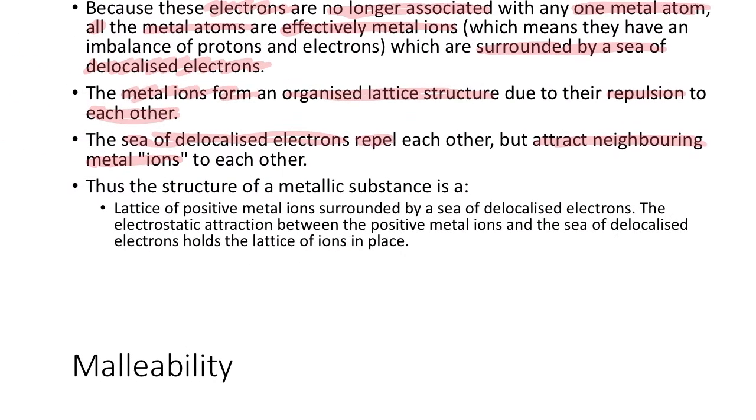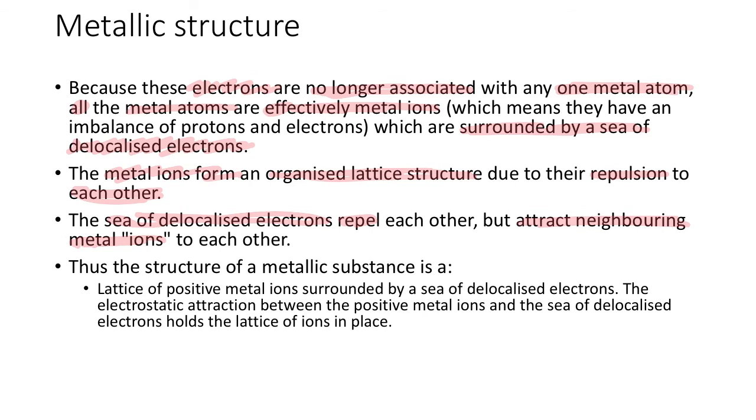So the idea is that if you were to ask to describe the metallic structure, you would say it's a lattice of positive metal ions surrounded by a sea of delocalized valence electrons or delocalized electrons. The electrostatic attraction, which is the attraction between the positive metal ions and the sea of delocalized electrons, hold the lattice of ions in place. So that's the metallic structure.